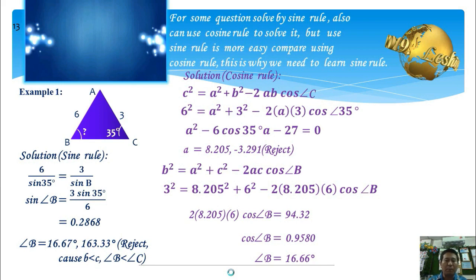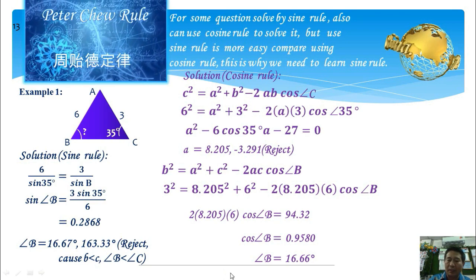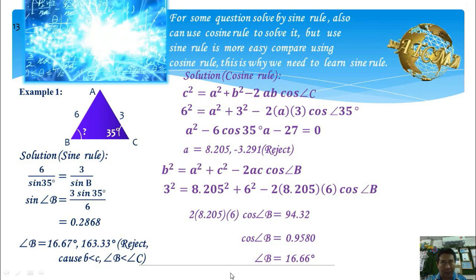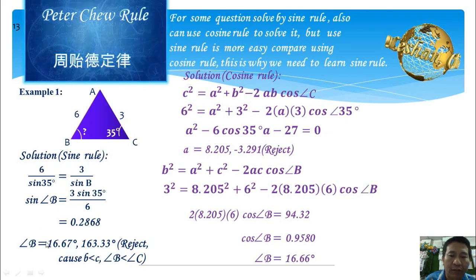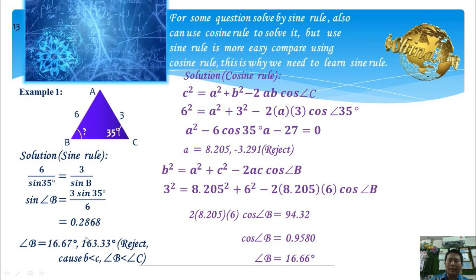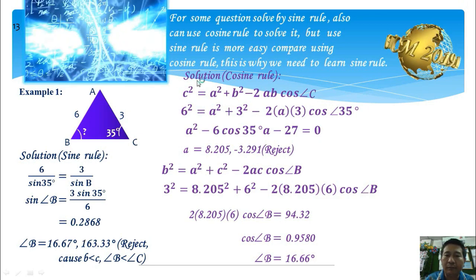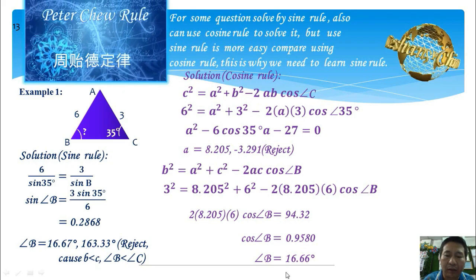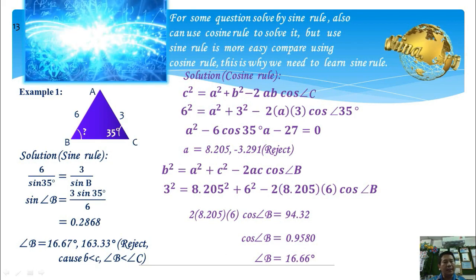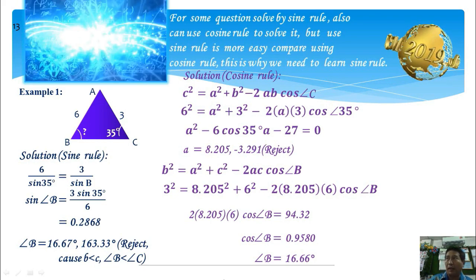In fact, for some problems solved by the sine rule, we can also solve them with the cosine rule. If we use the sine rule, we only need to apply it once to get the final answer. But if we use the cosine rule, we need to use it twice to get the final answer. Therefore, it is easier to use the sine rule than the cosine rule, which is why we need to learn the sine rule.